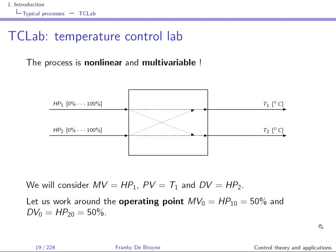The process is non-linear and multi-variable: there are two inputs and two outputs, and each input influences both outputs. The first heating power influences T1 but also T2, and the second heating power influences T2 but also T1. This coupling effect is amplified by adding a metallic link between the heat sinks on TCLab.